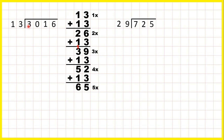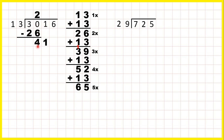Taking the first two digits together, we have 30 divided by 13. The closest number to 30 that's still less than 30 is 26, so 26 goes underneath. And because that's 2 times 13, we need 2 in our answer line. Now we subtract and bring down: 30 minus 26 is 4, and we bring down the 1, so we have 41 divided by 13.